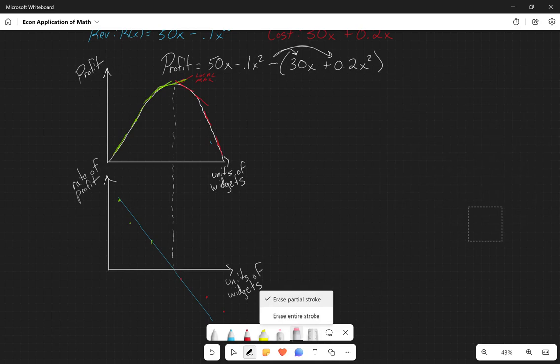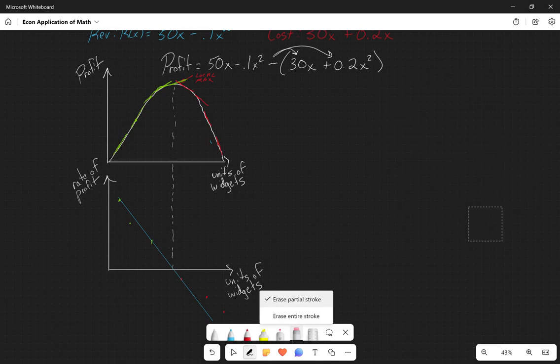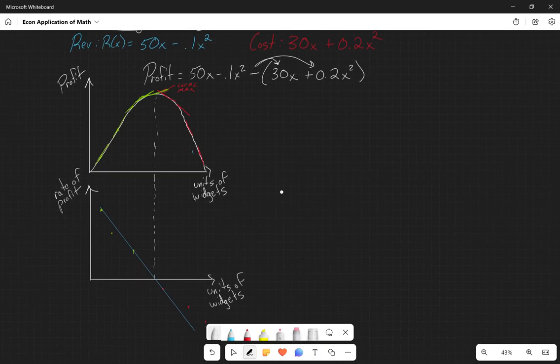So we're taking the derivative and we're setting it equal to zero because essentially it's a shortcut for us to figure out that local maximum. Instead of having a chart where we say, okay, if we do one, how much is profit? If we do two, how much is profit? If we do three? We could do that in Excel, but that would take a lot of time. So this is our shortcut. And so there's two real ways that we can do this shortcut. The first of which is we can just take this full equation. We can combine some of the parts to it. So for instance, if we combined like parts here, 50 minus 30 is 20x. And again, if we combine like parts, 0.2 minus 0.1 is plus 0.1x squared.